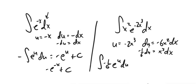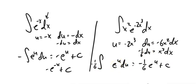I can pull that negative 1/6 out because it's multiplying by that constant. e to the u is itself. I'm going to substitute that u back in, and don't forget your plus constant.